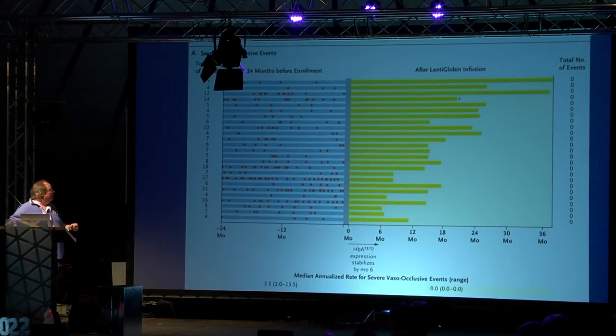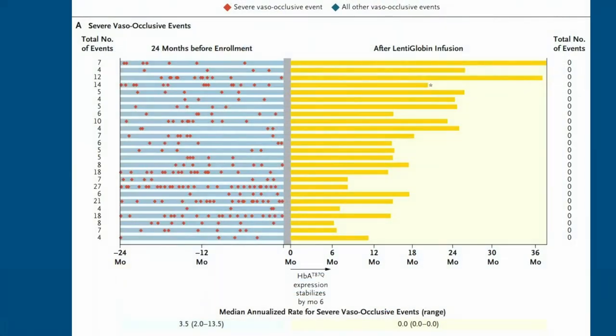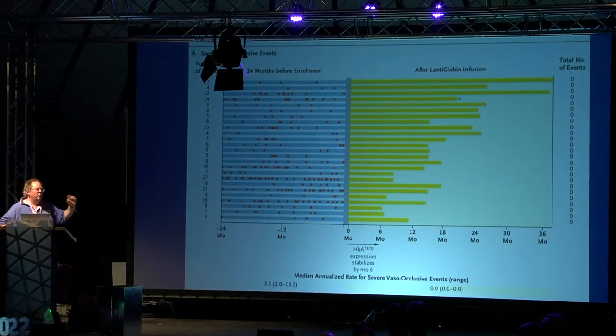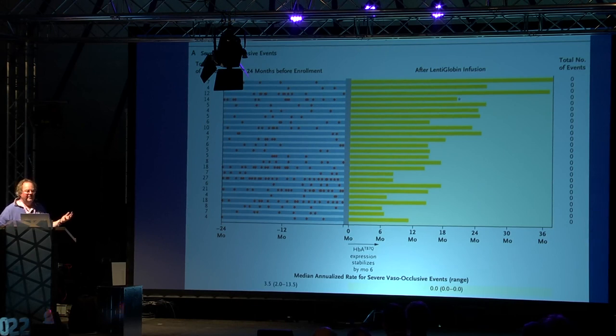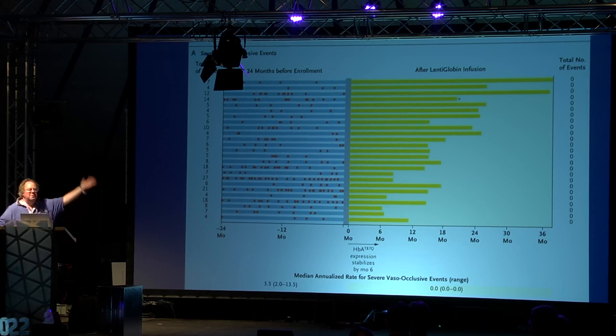It works — tremendously well, though tremendously hard work. It uses one of these lentiviruses to insert a fixed gene, and it mostly gets inserted in the right place. Mostly. On the left you see people before treatment — every red block is a severe event requiring a hospital visit due to sickle cell disease. In yellow are the treated people. There are no red markers there anymore. Most news about gene therapy is hyped up, but this is for real: 100% score, an extremely impressive result.